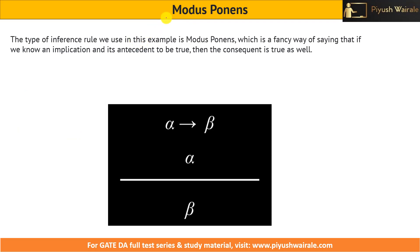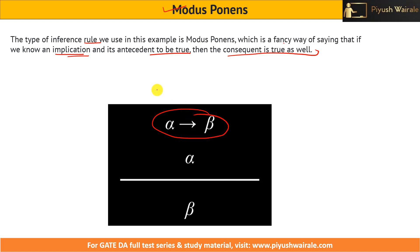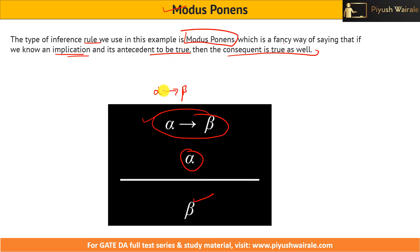Whatever we just discussed is basically modus ponens — a type of inference rule. Modus ponens is a fancy way of saying that if we know an implication and its antecedent to be true, then the consequent is true as well. So alpha implies beta — if alpha is true then beta is also true. If we are given this implication and we are also given that alpha is true, then we can conclude beta is also true. This is what modus ponens is.